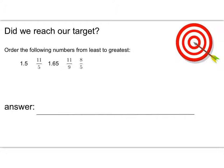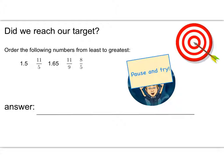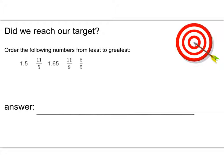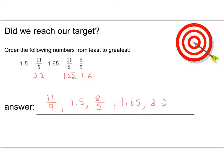Go ahead and use whatever technique you'd like to put these numbers in order. Pause the video, give it a shot, and then come back and see how you did. I converted them all to decimals — I think that was probably the best way to go about this. Even though we have some common denominators and common numerators, when you have other decimals mixed in it's still kind of hard to figure out. So I converted them all to decimals and came up with this answer.